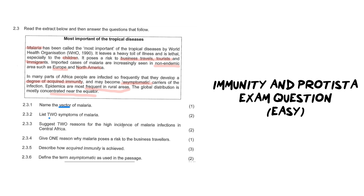For number two it says: list two symptoms of malaria. Remember this cannot be taken from the paragraph up here because there's no information there. This requires us to know a little bit about this information beforehand, but it's very simple — something you would have learned in class. It can be any symptom, such as malaise or lethargy, fever, or night sweats. There's a whole long list that you would have learned in class.